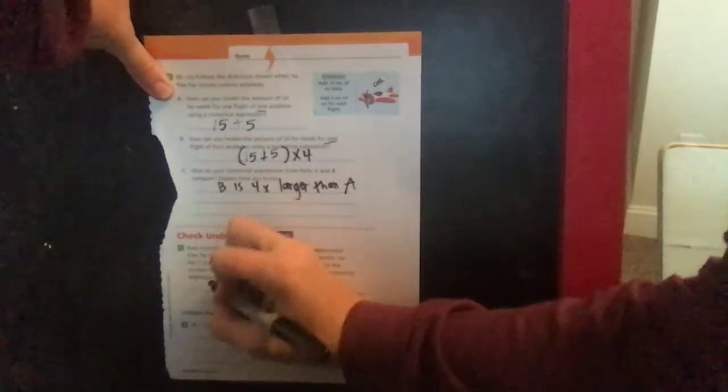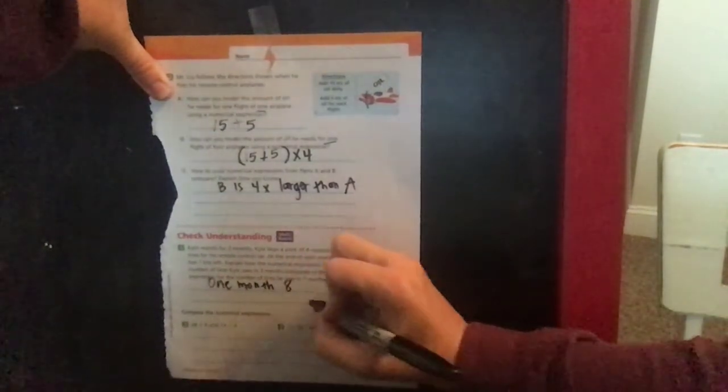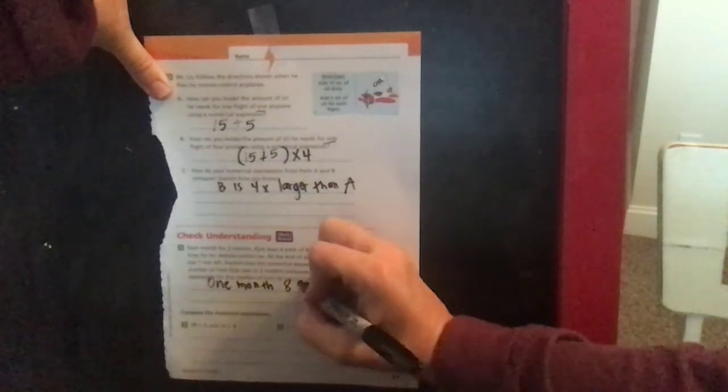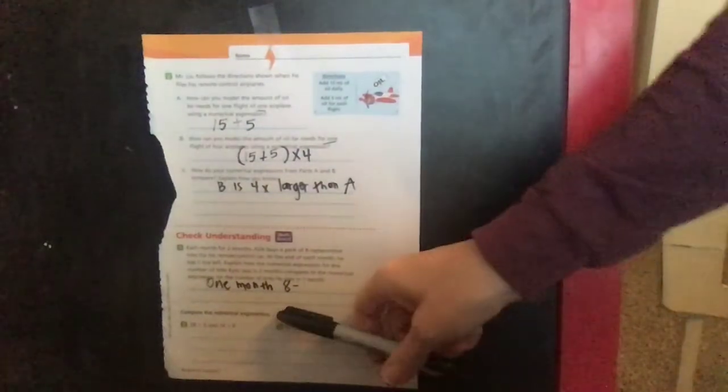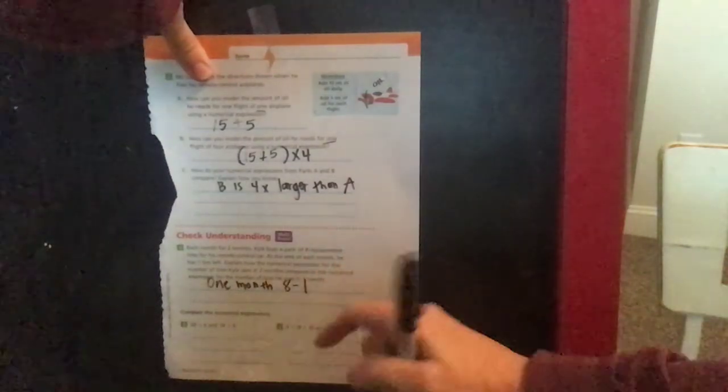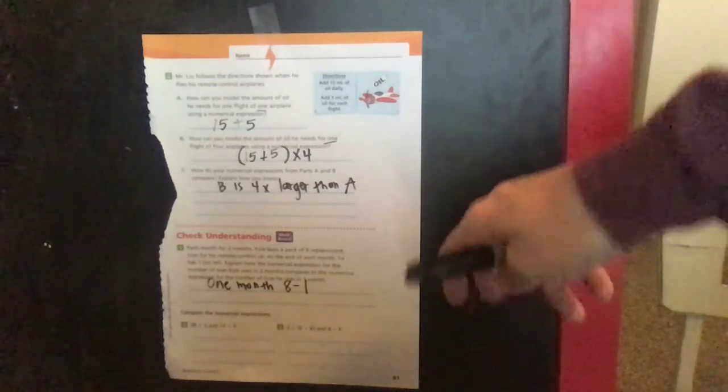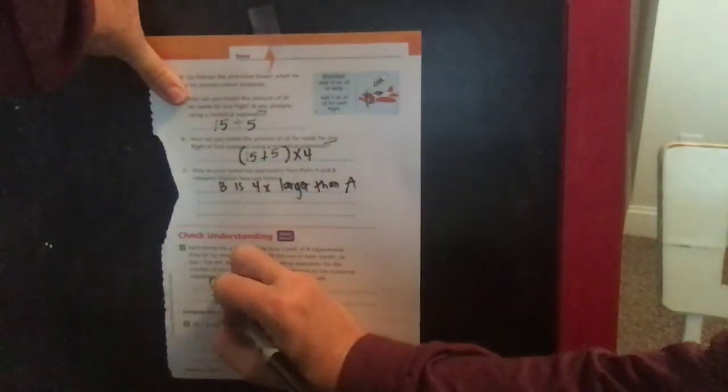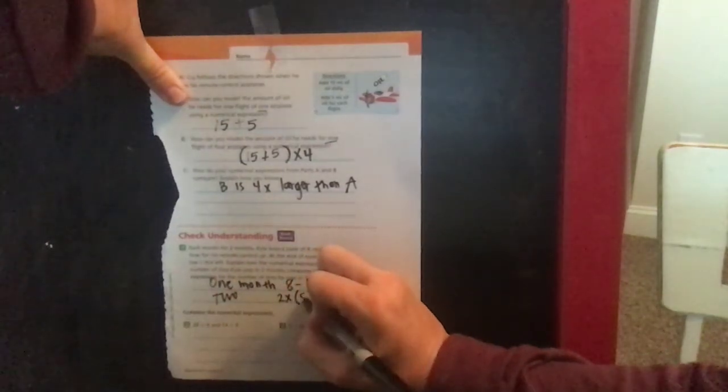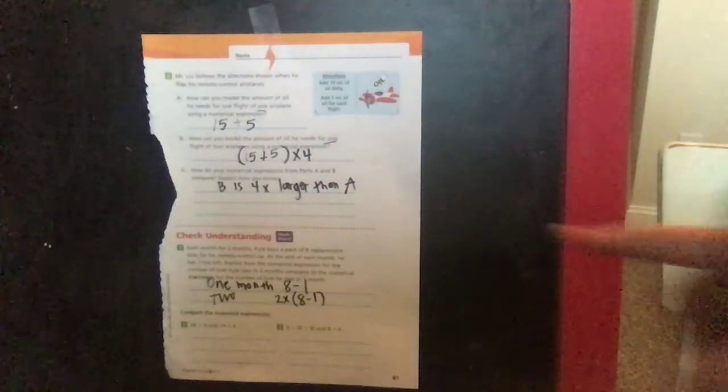For one month, remember he had eight and he had one left. So if he had eight and he had one left, I know he used eight minus one, he used seven of those. But if this was two months that he had this, then it's going to be twice that amount. Two months: two times (8 minus 1). Because he's going to use seven in that first month, and in the second month he's going to use seven two times, so that would be that 14. So let's compare these.